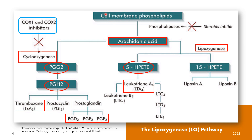Leukotriene A4 is converted to the potent leukotriene B4 and the cysteinyl leukotrienes LTC4, D4, and E4. Sequential oxidation of arachidonic acid by the action of lipoxygenases leads to the formation of lipoxins — lipoxin A4 and lipoxin B4. The lipoxins are structurally related to the leukotrienes but appear to act through a distinct set of receptors and have different actions in vivo.